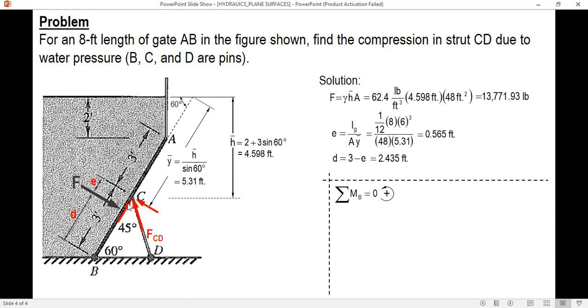Now only this component will produce movement. And since this angle is 45 degrees, then this component is FCD sine of 45, and the distance of this force from B is 3 feet. So summing up moment, the moment of F is negative, clockwise. The moment of FCD sine 45 is counterclockwise. So this is the equation.